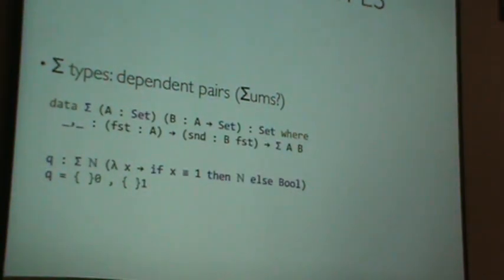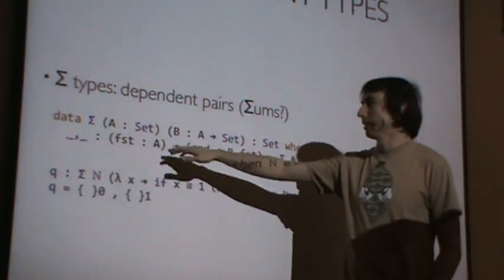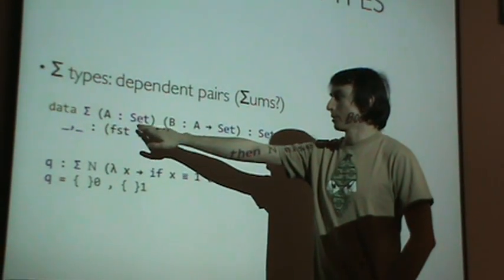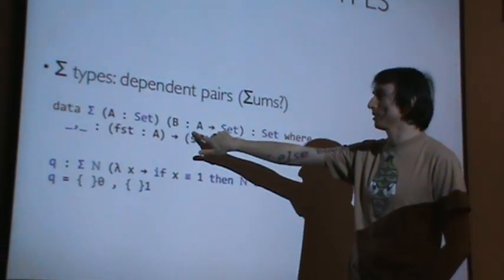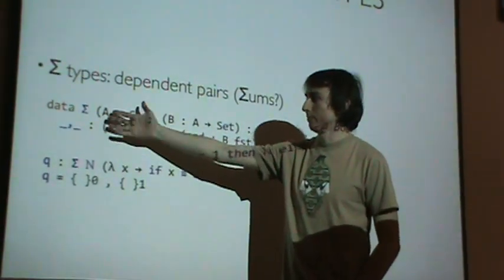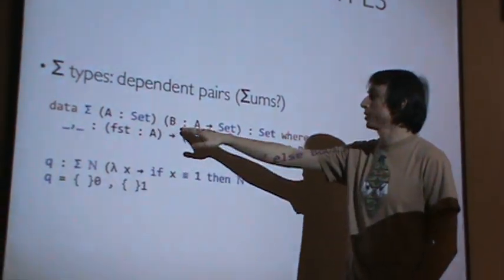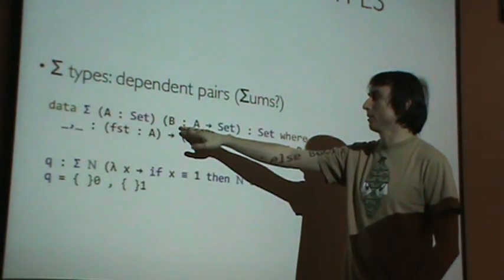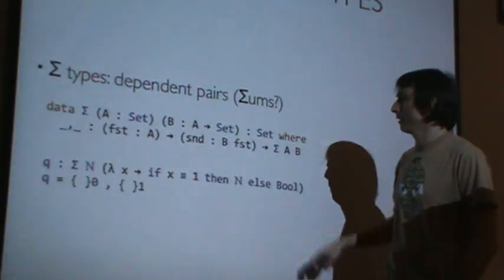So here we've defined sigma in Agda. You can actually write it in Agda. Sigma takes basically, this is the first element of the pair. And this is the function determining the second element of the pair. So it says I have a type, basically a type I'm going to call A, and a function that gives me a type from a value of type A. And this whole thing is set.